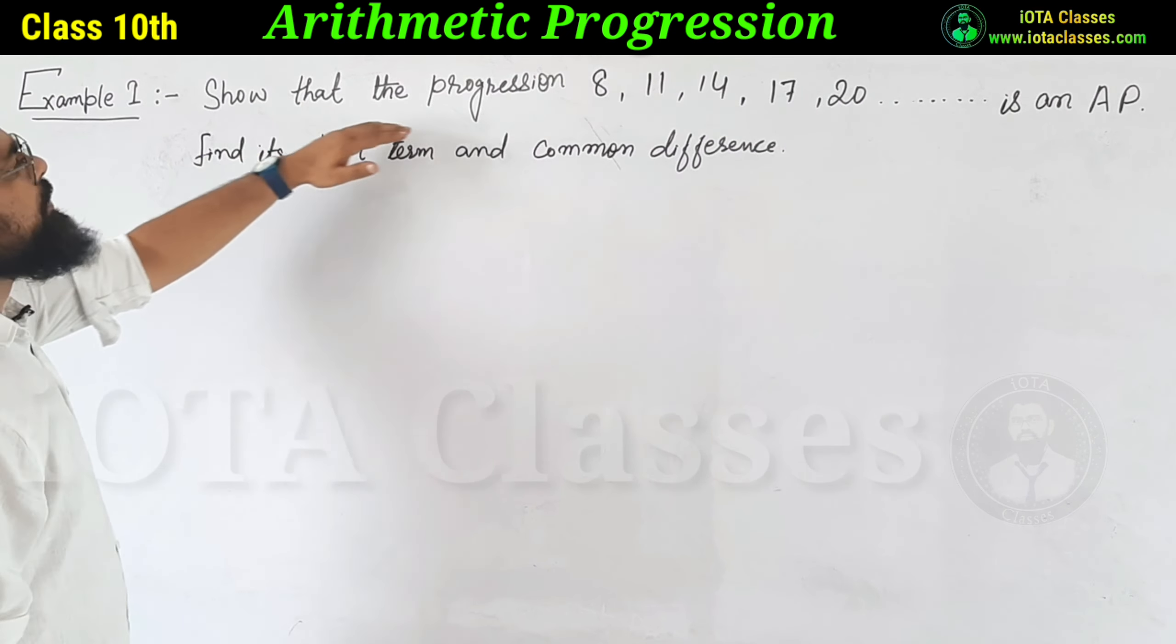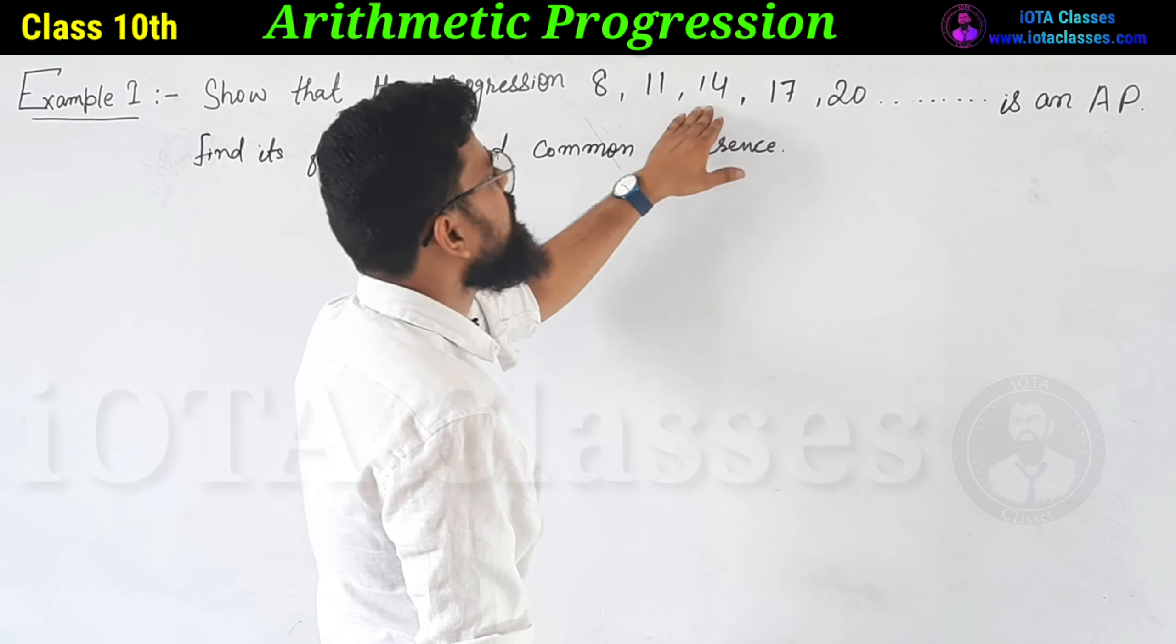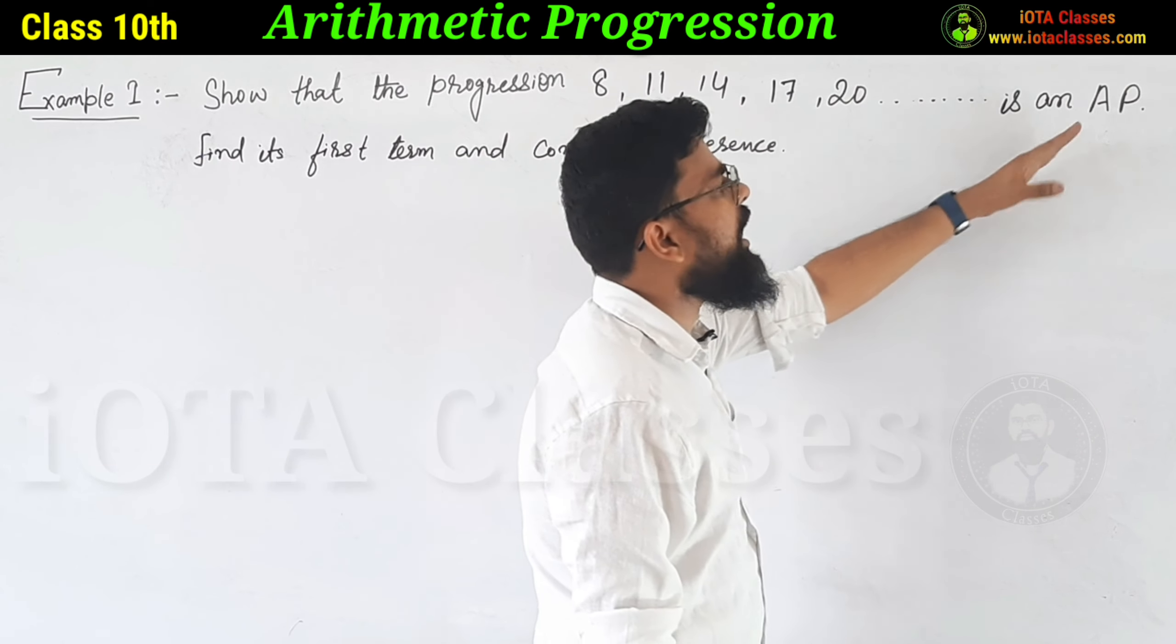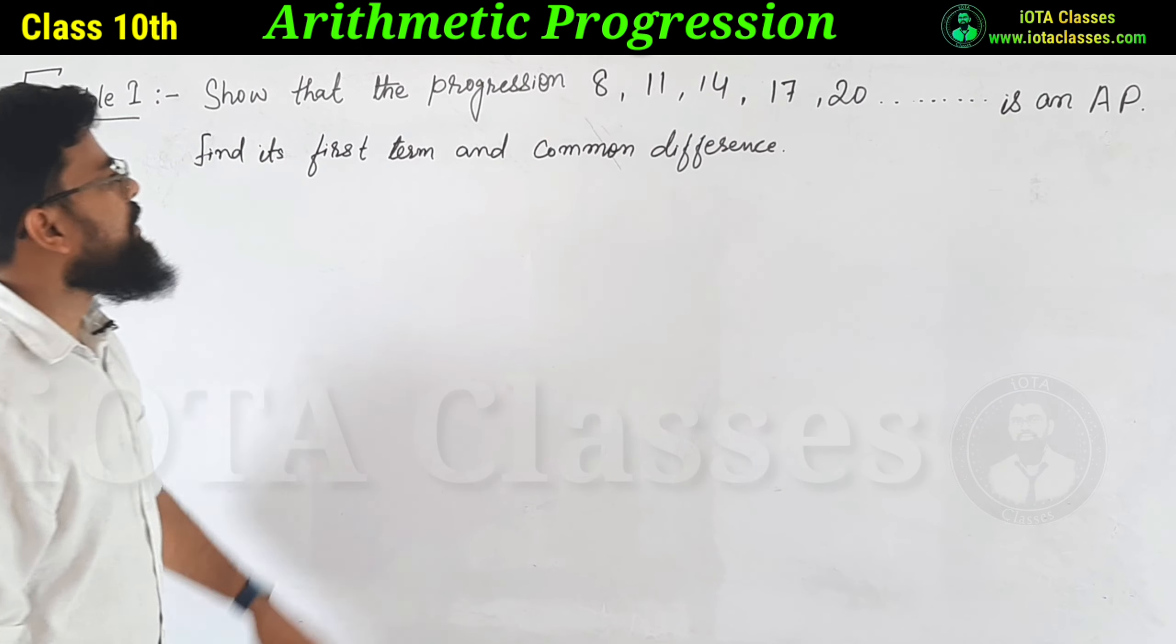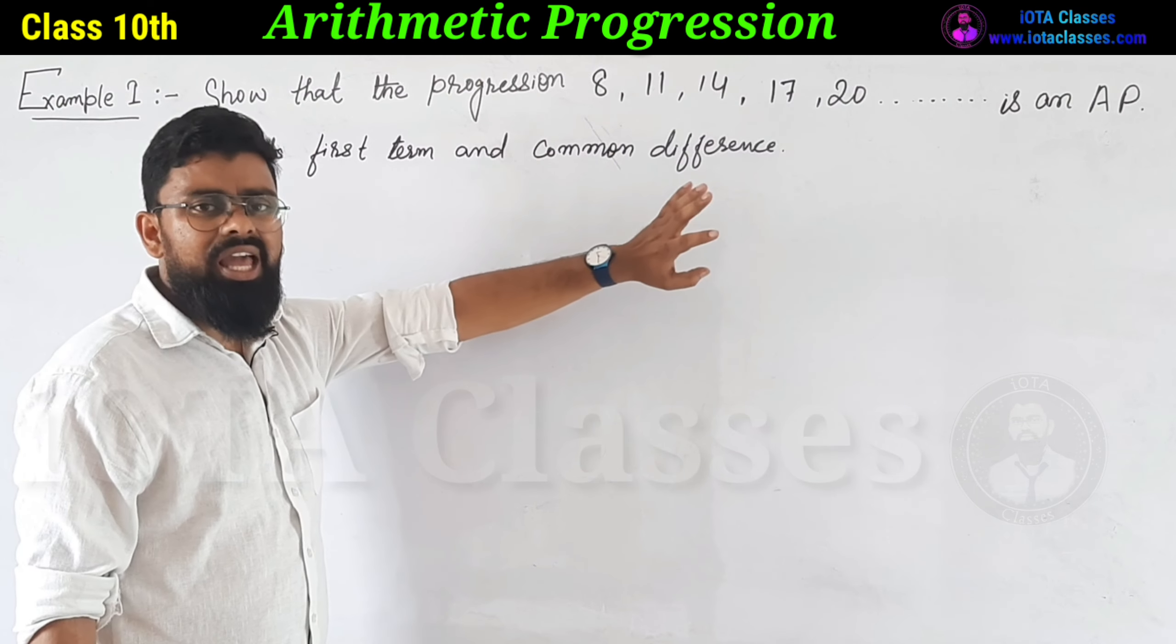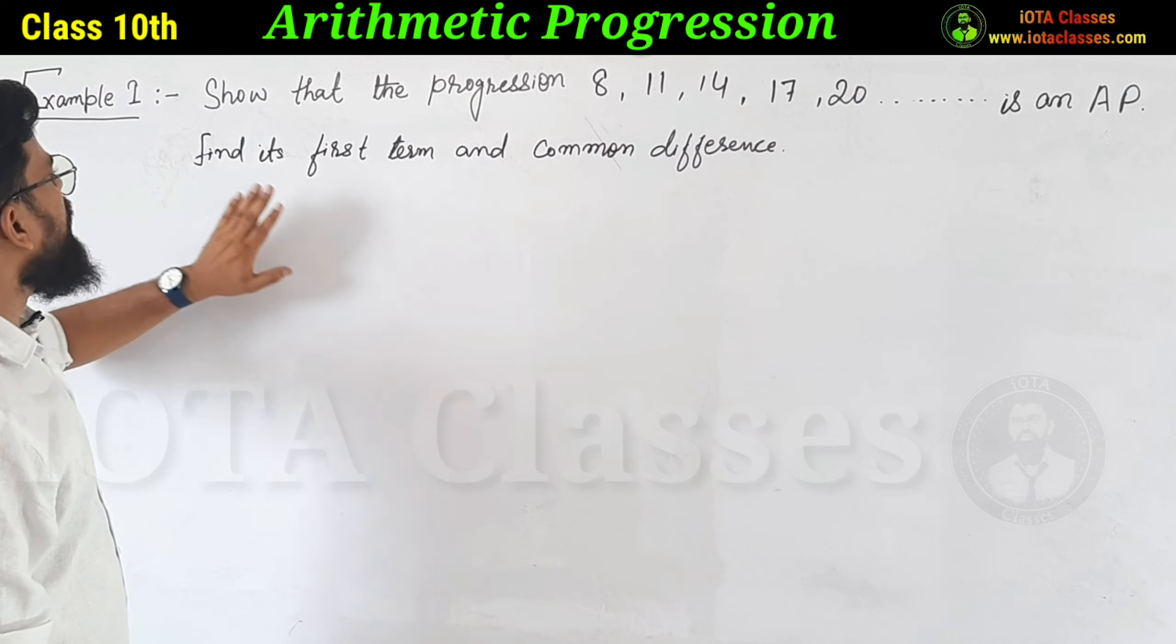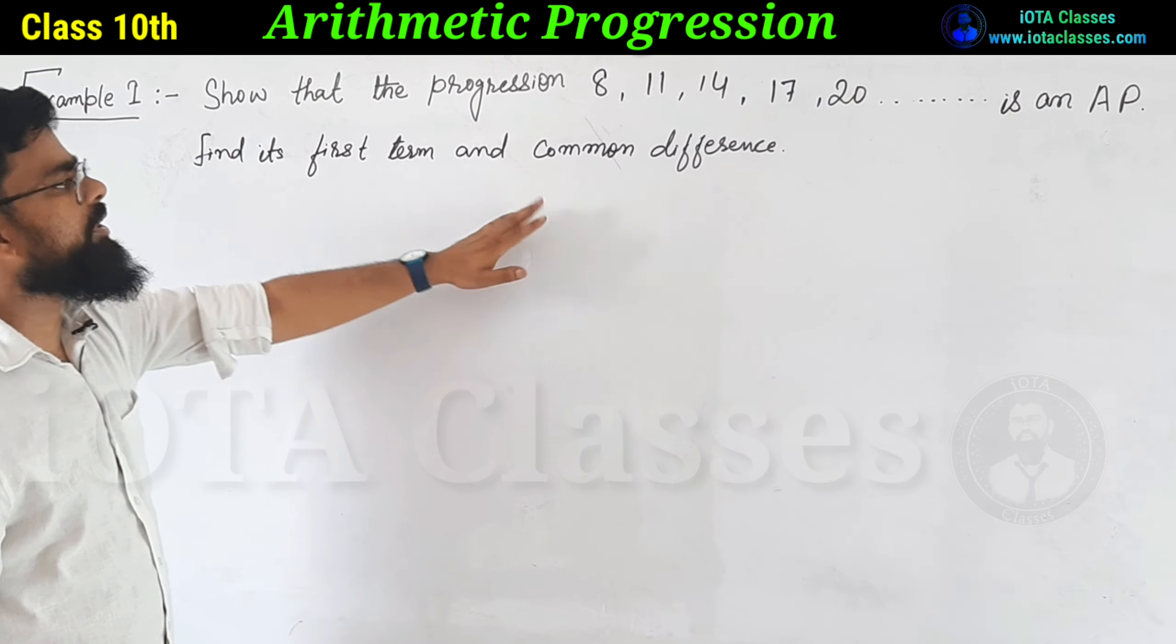Show that the progression 8, 11, 14, 17, 20 and so on is in AP. This is in AP which we have to show and find its first term and common difference.